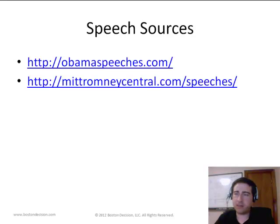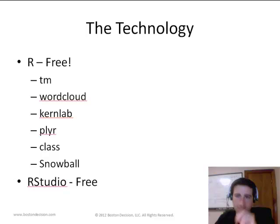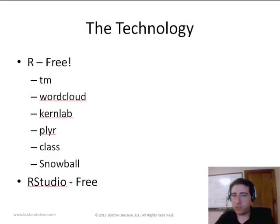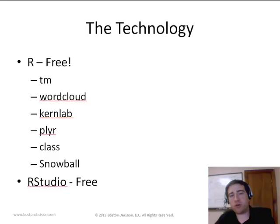For this presentation, our data comes from two sources: obamaspeeches.com and mittromneycentral.com. The technology we're using consists of two pieces. The first is R, a data analysis language that's freely available, open source, and has many libraries that extend its functionality. We also used RStudio, which is a development environment for R. It's completely free and was developed by a company here in the Boston and Cambridge area.